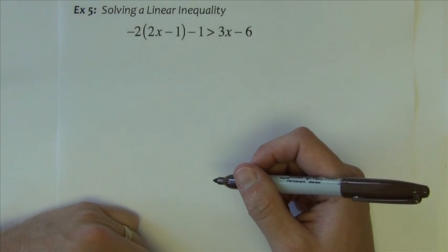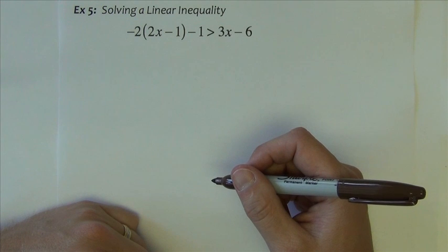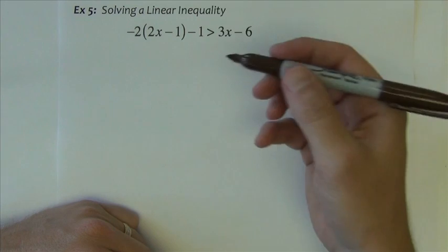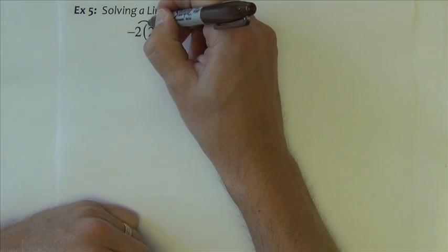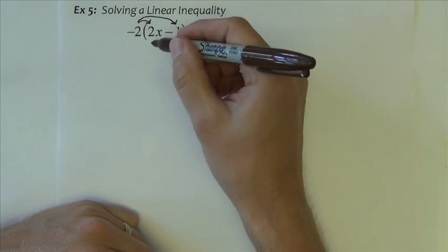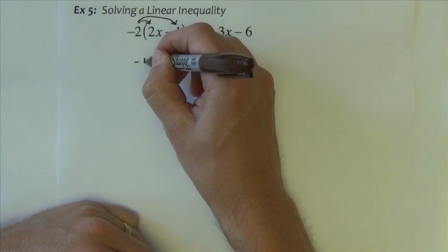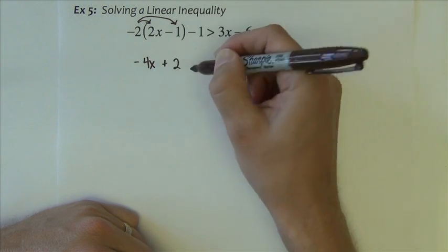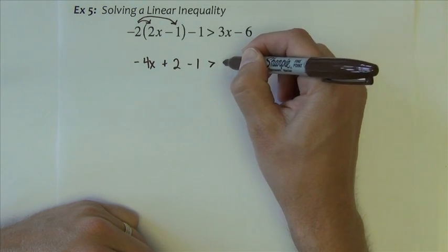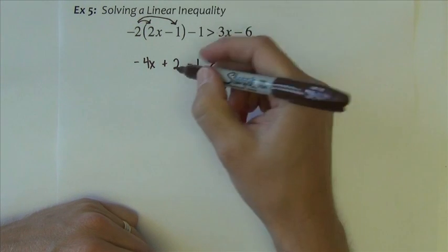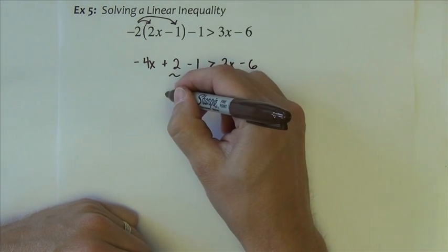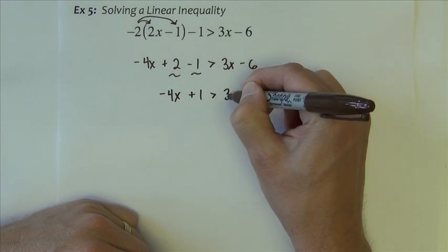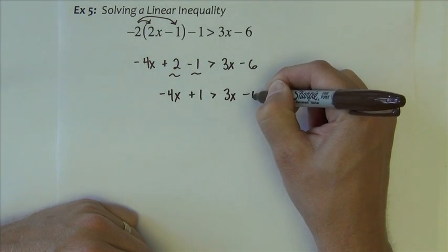This next example we're going to look at a linear inequality. To begin with, all the steps that we would do with the equations from before are the exact same that we're going to do with this inequality. So I'm going to begin by distributing this negative 2, giving me negative 4x plus 2, it's plus because the two negatives multiply to positive, minus 1 is greater than 3x minus 6. I do have some like terms here, so it becomes negative 4x plus 1 is greater than 3x minus 6.